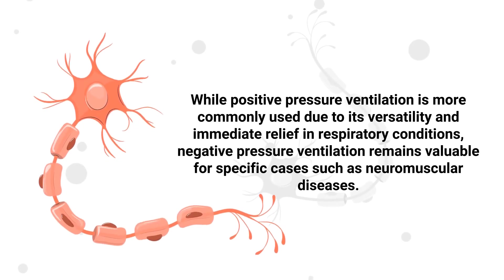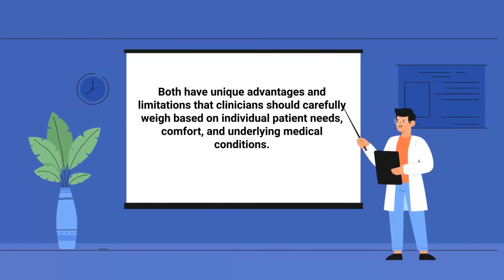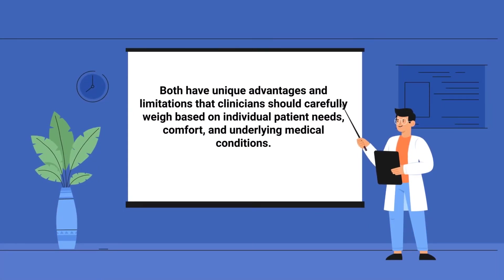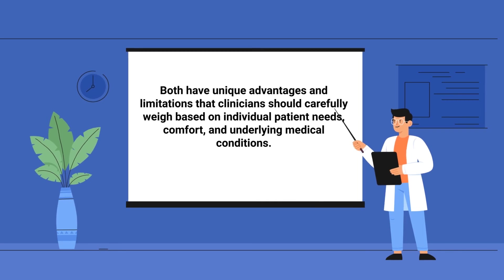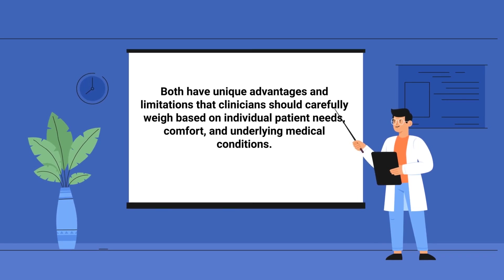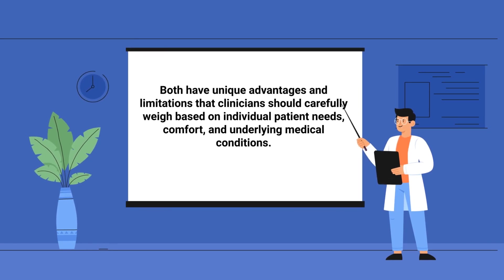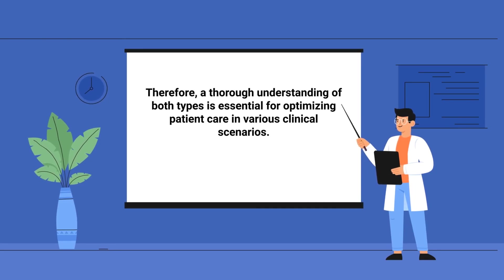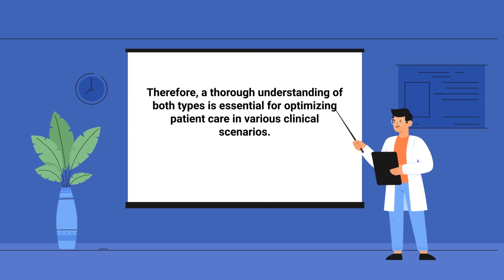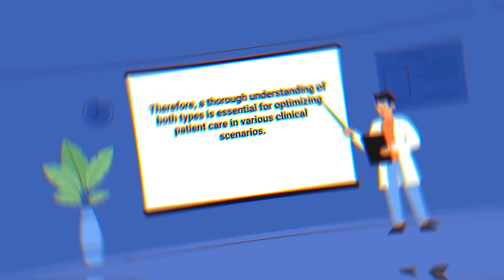While positive pressure ventilation is more commonly used due to its versatility and immediate relief in respiratory conditions, negative pressure ventilation remains valuable for specific cases such as neuromuscular diseases. Both have unique advantages and limitations that clinicians should carefully weigh based on individual patient needs, comfort, and underlying medical conditions. A thorough understanding of both types is essential for optimizing patient care in various clinical scenarios.